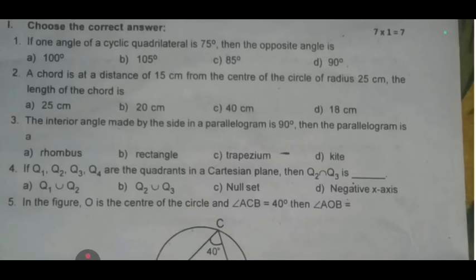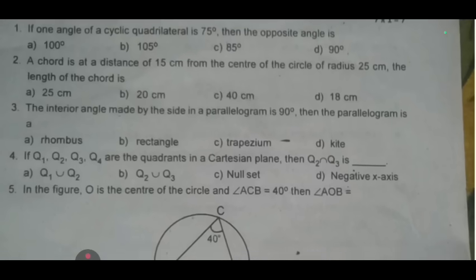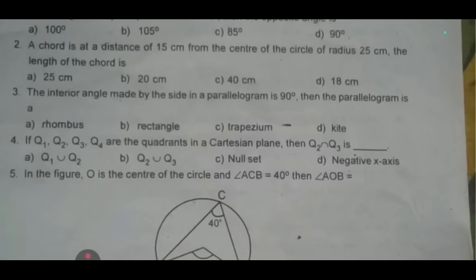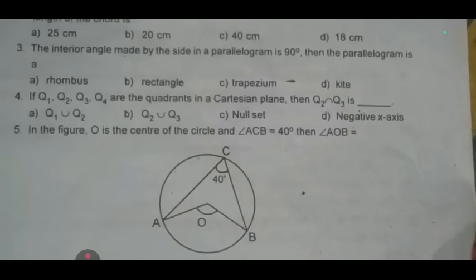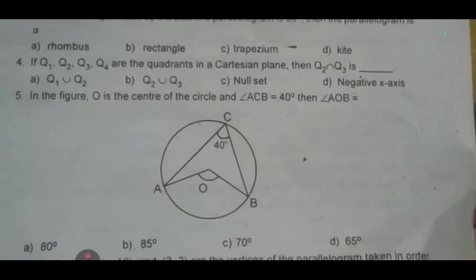Fourth one: if Q1, Q2, Q3, Q4 are the quadrants in a Cartesian plane, then Q2 intersection Q3 is dash. Fifth one: in the figure, O is the center of the circle and angle ACB equals 40 degrees, then angle AB equals dash.